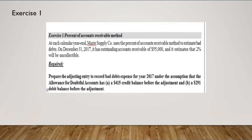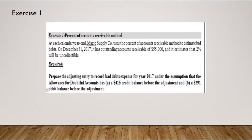Let's start with exercise one: percent of accounts receivable method. If you remember last time, I solved the estimation using the percent of sales method. In percent of sales, I simply multiply the percentage by the amount of sales given, and that number is inserted directly in the entry for estimating bad debts. Here in the percent of accounts receivable, it's a little more complicated, because we do not just take the percentage times the amount of accounts receivable and insert it. Further calculation is needed.